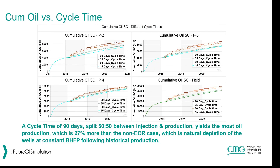The sensitivity analysis results show that the 90-day cycle time with a 50-50 injection-production split yields the most oil production — 27% more than the non-EOR natural depletion case at constant bottom hole flowing pressure. This represents a significant increase in oil recovery from the Huff and Puff forecast.